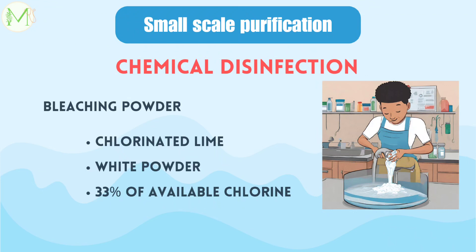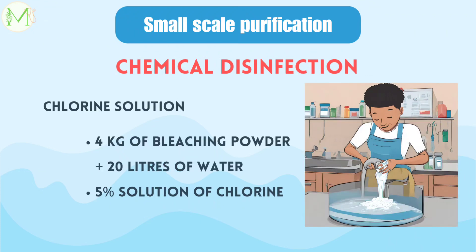Let's move on to chemical disinfection. One of the ways to chemically disinfect water is by adding bleaching powder, also known as chlorinated lime. It is a white amorphous powder which contains 33% of available chlorine. The next way is by adding chlorine solution, which is prepared by mixing 4 kg of bleaching powder with 20 liters of water to give a 5% solution of chlorine.